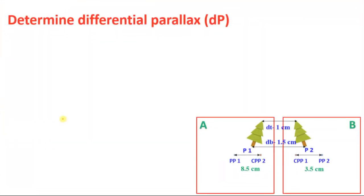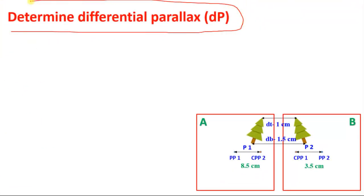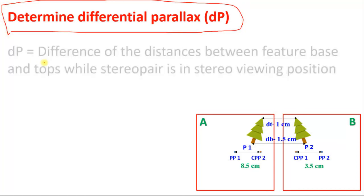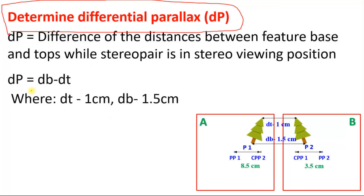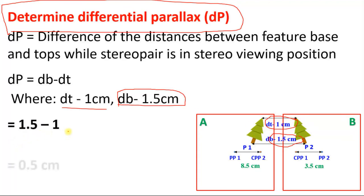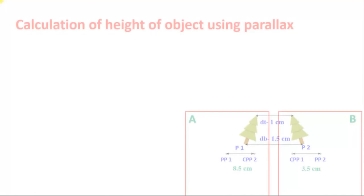Next, determine the differential parallax, called dp. The formula is the difference between the feature base distance and the top distance in the stereo pair in stereo viewing position: dp = db − dt. Here db = 1.5 centimeters and dt = 1 centimeter, so dp = 1.5 − 1 = 0.5 centimeters. This is the differential parallax.